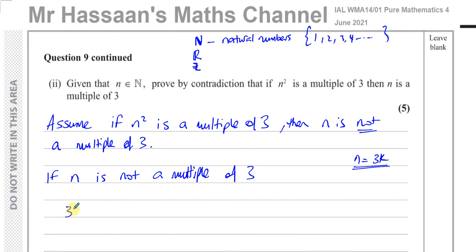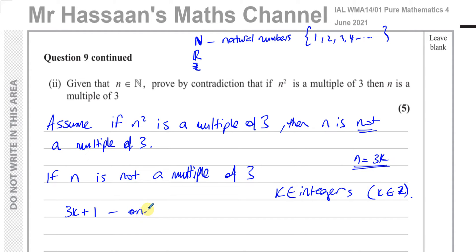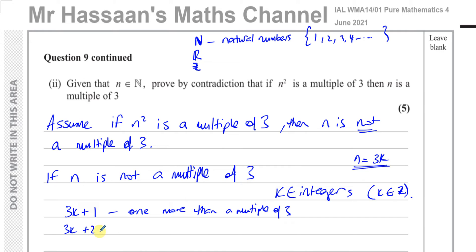If the remainder is one, we write n = 3k + 1, where k is an integer (k ∈ ℤ). This expression is one more than a multiple of three. When k = 0 this gives 1; when k = 1 this gives 4; when k = 2 this gives 7 — so it covers the numbers 1, 4, 7, and so on.